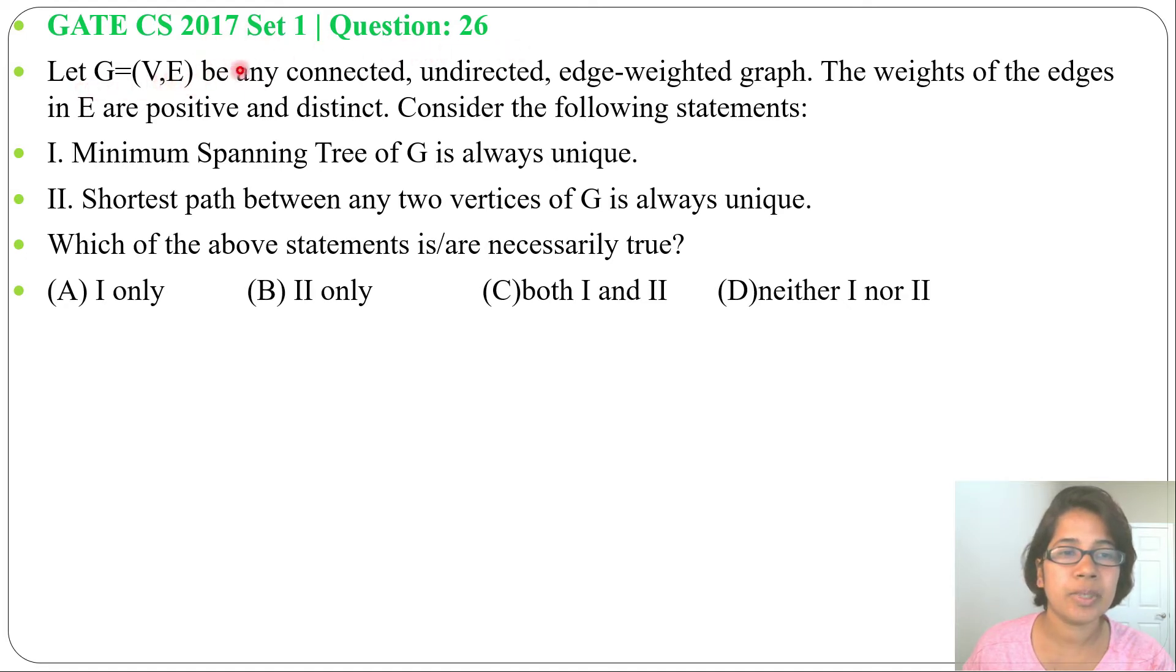Let G equals to V, E be any connected, undirected edge-weighted graph. The weights of the edges in E are positive and distinct. Consider the following statements. Two statements are given. Which of the above statements is or are necessarily true?